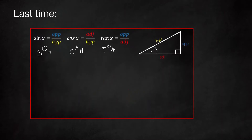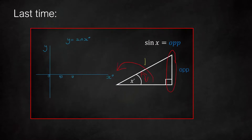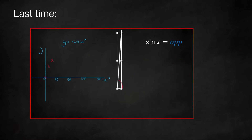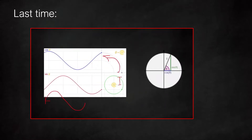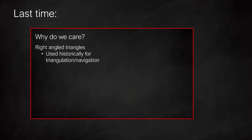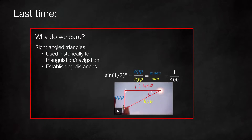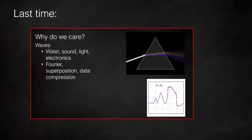We recalled the right angle triangle definition and revised SOHCAHTOA using it to do two examples. We then looked at how we could use this triangle definition to get the trig graphs, and then went on to demonstrate a more intuitive way to get the graphs from the unit circle, which we'll start with today. The video ended with justifying why we care about trig at all, both in terms of using right angle triangles and talking about how we can use trig functions to model waves.